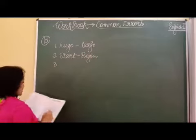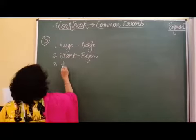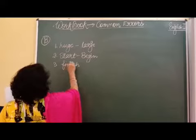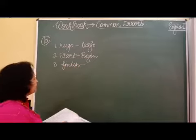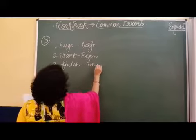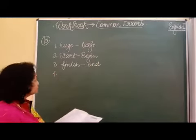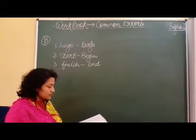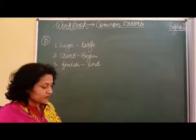Number 3, we are given: finish. The word finished is given; we have to find out: end. Number 4, we are given: sea. For sea, we can continue with foolish.